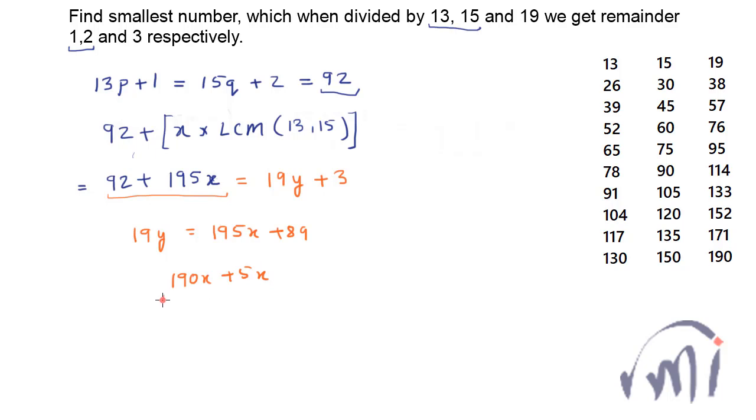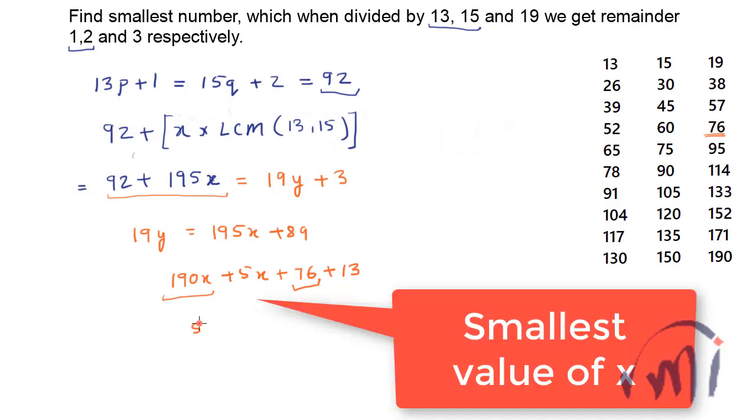So this 195x can be written as 190x plus 5x. Here this 190x is completely divisible by 19 and this 89 can be written as 76 which comes in the table of 19 so 76 plus 13. So here this 76 is completely divisible by 19 and now we have to see for which value of x 5x plus 13 will be divisible by 19.